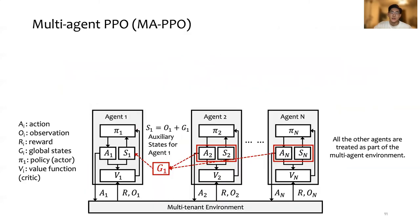To tackle the non-stationarity issue for single-agent RL in multi-tenant cases, we propose a customized multi-agent RL algorithm based on PPO, and we call it MA-PPO.